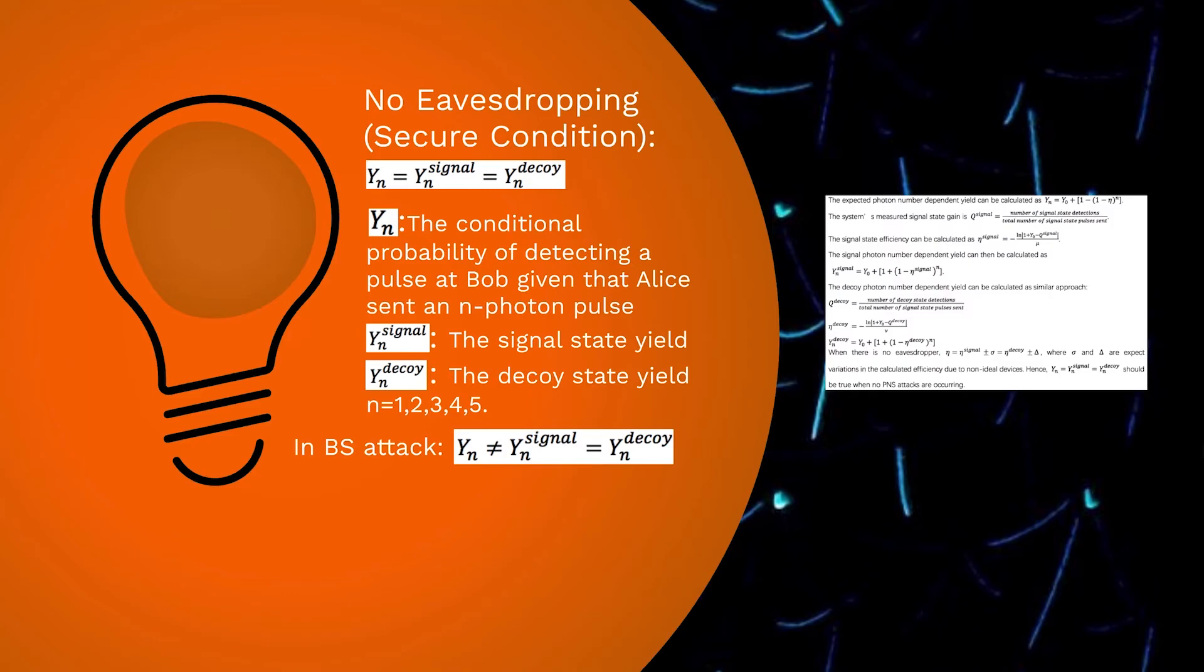Since both signal and decoy state pulses are affected to the same extent, Alice should have a result of equal amounts of signal and decoy photon number dependent yield. However, some photons sent are reflected off the quantum channel by the beam splitter. The signal and decoy state photon number dependent yields will be different from the expected value.